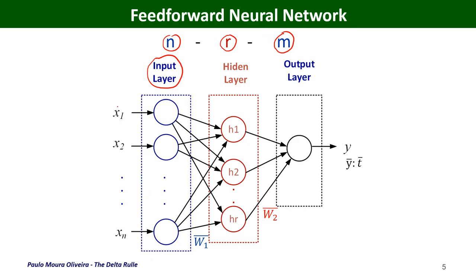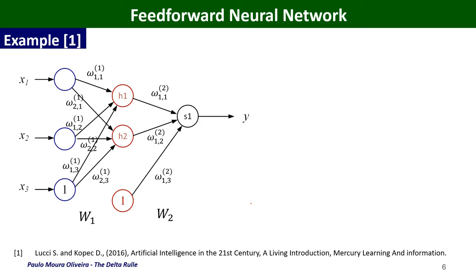We are going to submit the network with the patterns and we have the target. The weights can be represented as matrices: the weights connecting the input layer to the hidden layer are represented by matrix W1, and the hidden layer to the output layer by matrix W2. We are going to use this terminology, which is the same used in this book. In this case, we have a 3-2-1 configuration: N equals 3, R equals 2, and M equals 1.